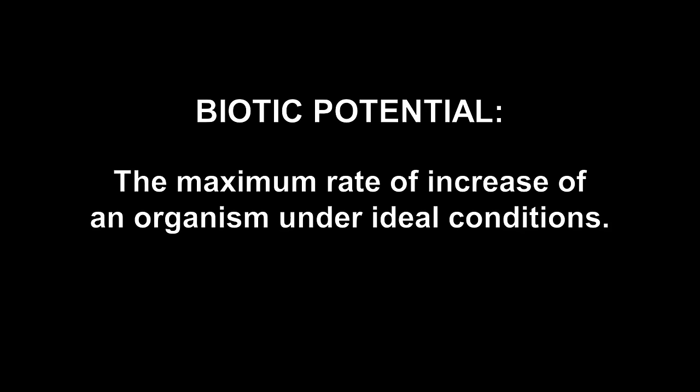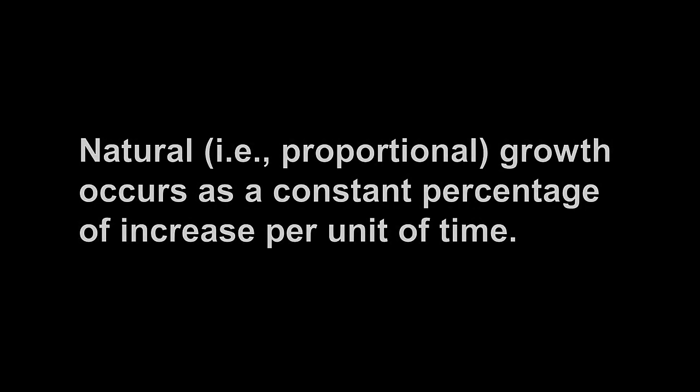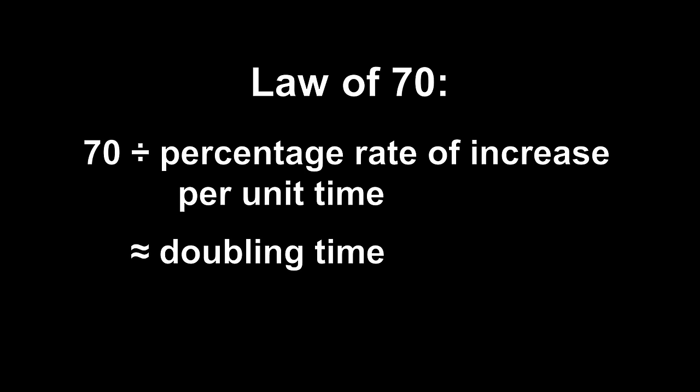We call this its biotic potential. Importantly, this business of doubling time being a constant isn't just true of bacteria. It's easy to show that whenever growth can be quantified as a constant percentage per unit time, then the doubling time is also constant. There's an easy rule of thumb to find the doubling time in such cases, called the law of 70.